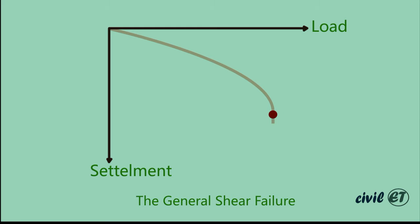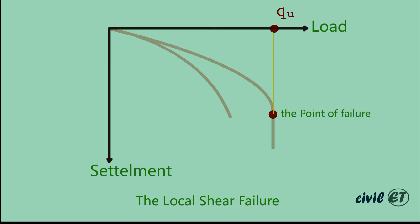where settlement increases alone without any increase in load. That point is defined as the ultimate bearing capacity. In local shear failure, the same happens—as load increases, settlement also increases, but this